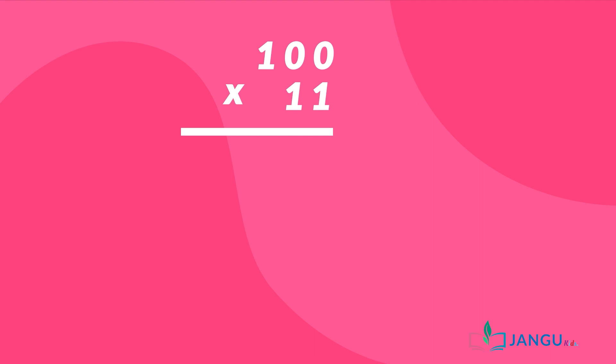Exactly, we multiply the rightmost digit of the multiplier — one — with the multiplicand, which is 100. One times zero is zero, one times zero is zero, one times one is one. We add zero under the rightmost column, then multiply one with the multiplicand.